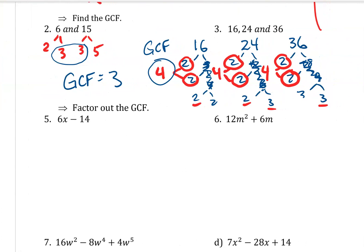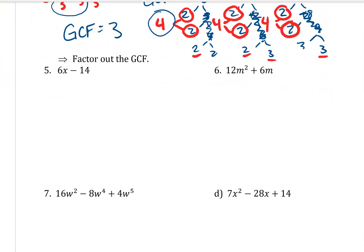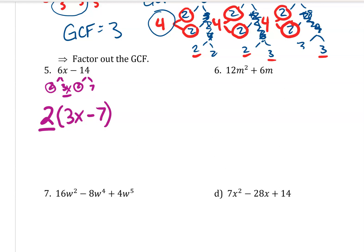Factor out the greatest common factor. 6 is 2 times 3, and 14 is 2 times 7. So I have a greatest common factor of 2. Let's divide out a 2 from each term. 2 times what is 6x? 2 times 3x. 2 times what is negative 14? Negative 7. So the result is 2 times (3x minus 7). 2 is my greatest common factor.